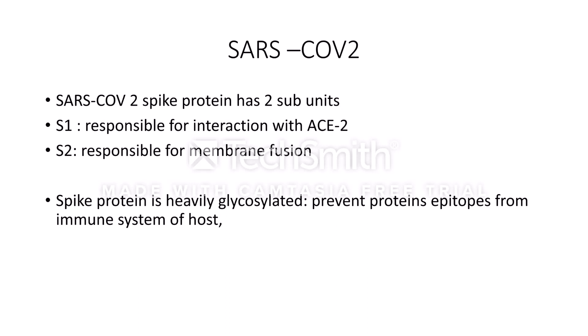In this video we will discuss SARS-CoV-2. Some things have already been covered in a previous video. The SARS-CoV-2 spike protein has two subunits: S1 and S2. S1 is responsible for interaction with ACE2, whereas S2 is responsible for membrane fusion and helping the virus get inside the cell. This has been discussed in detail in a previous video — you can check out the SARS virus cycle playlist.